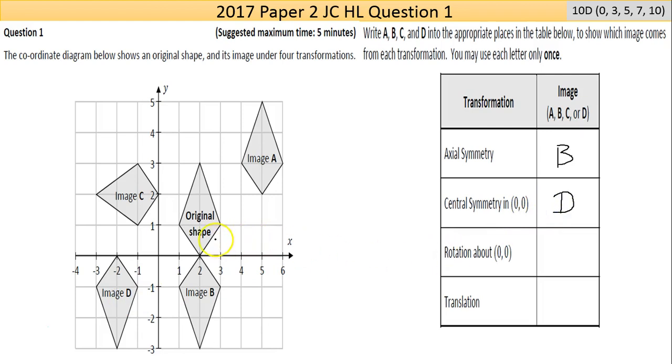Now rotation around (0,0) is the one that's actually new to me. You see here this point at (2,2) is the shape here. Okay so it's rotating around the origin. That would be image C.